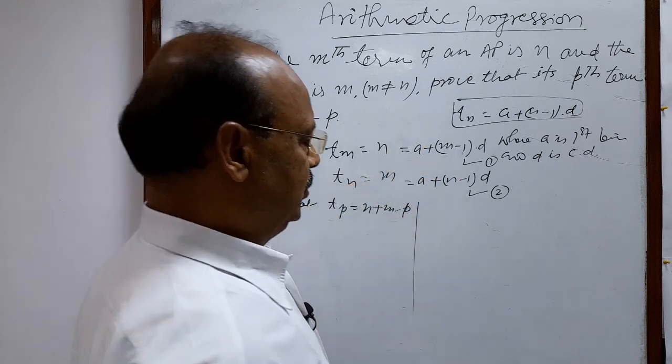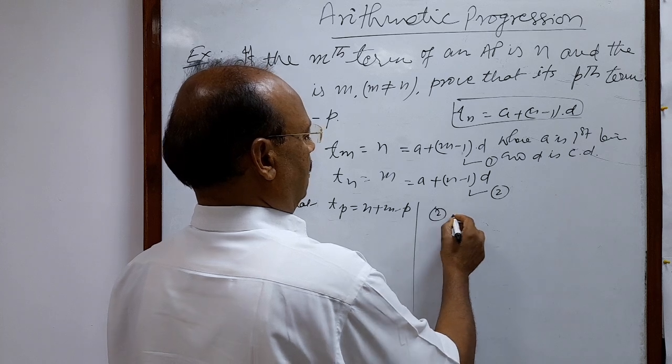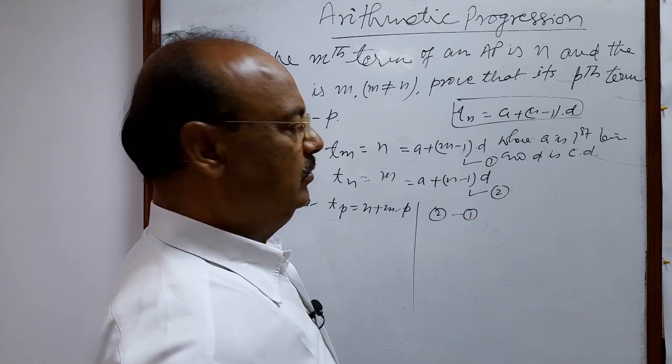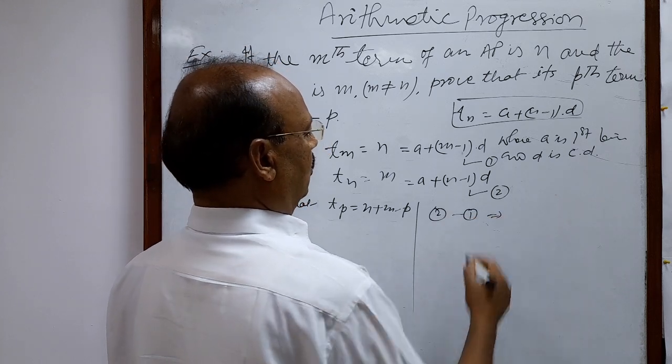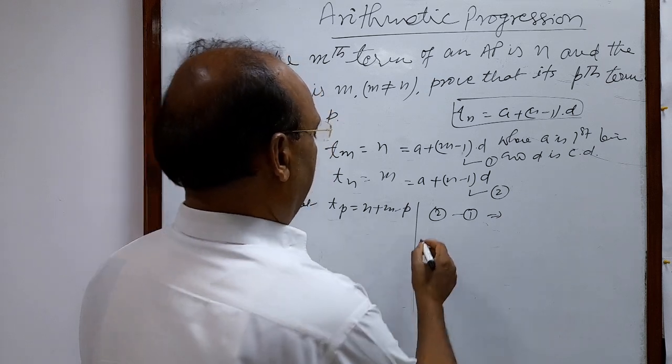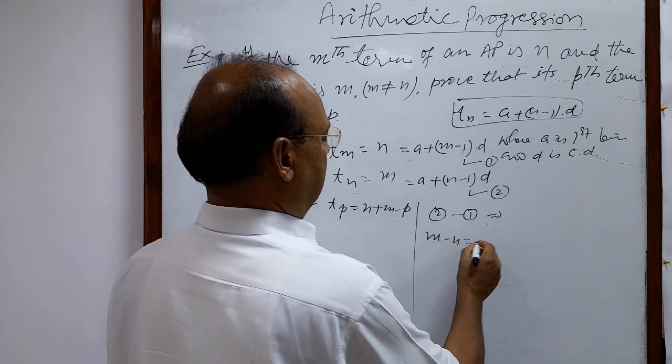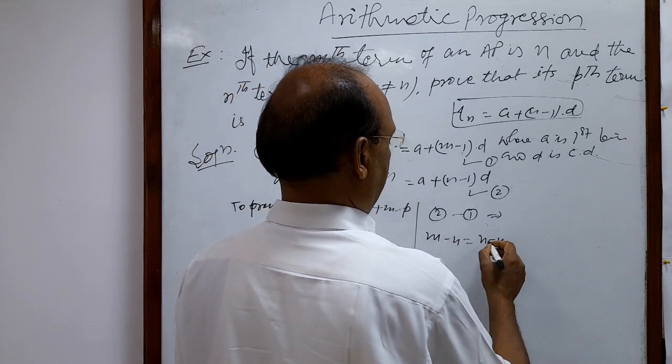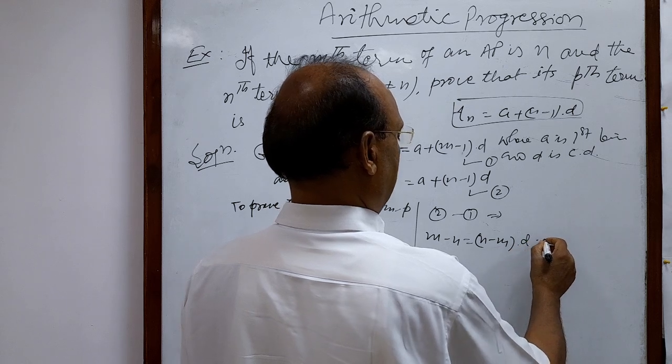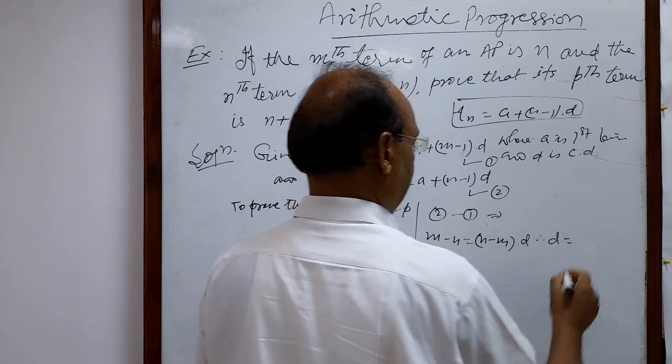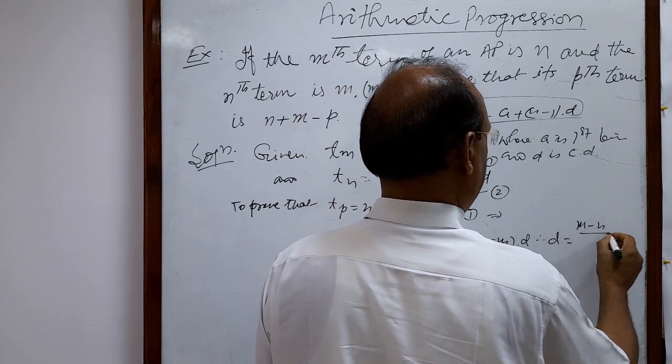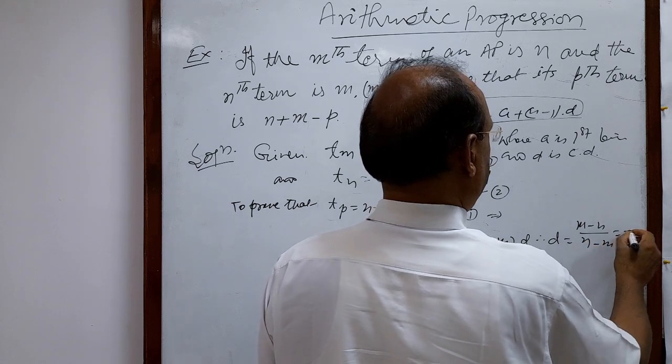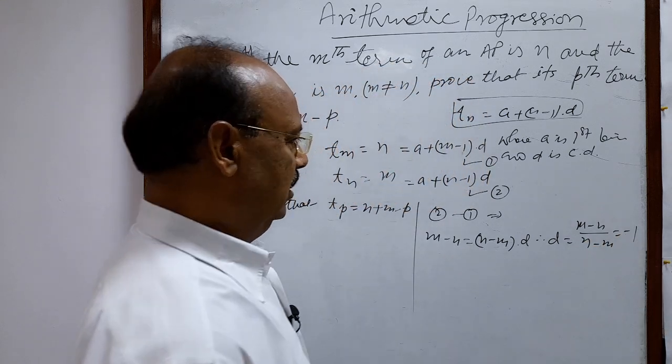Now let us solve these two equations by subtracting relation 1 from relation 2. We get m minus n equals (the a terms cancel out) n minus m times d. Therefore d equals (m minus n) over (n minus m), which equals minus 1.